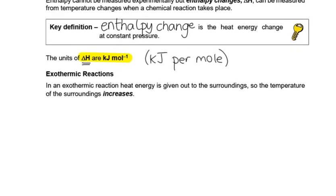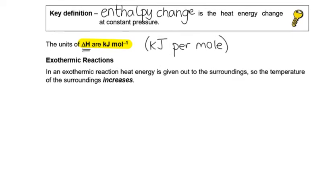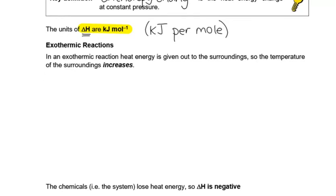What types of reactions did you come across at school? You might have come across exothermic reactions, which literally translates to out-heat. Heat energy is given out of these reactions. If you imagine your chemicals sitting there reacting, they're going to give out heat.